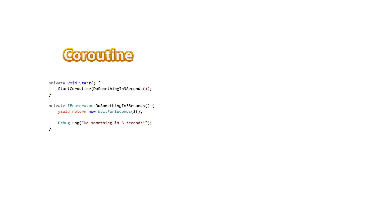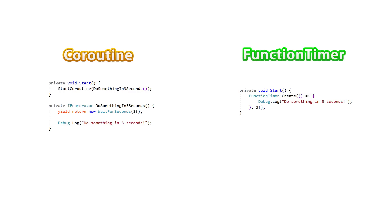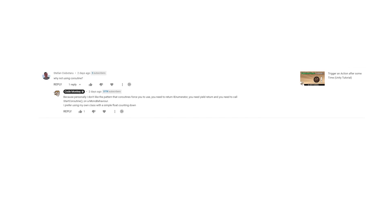However, the reason why I personally dislike coroutines is because of the pattern they force you to use. For a coroutine to work, you need to change the function return type to IEnumerator, use yield return, call StartCoroutine somewhere to start it, and you also need a MonoBehaviour to run it. I find that entire pattern to be quite clumsy and a very rigid set of requirements. So I much rather create just an extremely simple class with a basic flow timer and a delegate that I can use in any way. But if you like using coroutines, don't let me discourage you — if the goal is to trigger an action after some time, either method works.